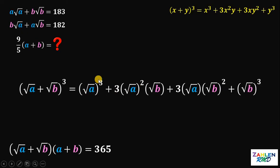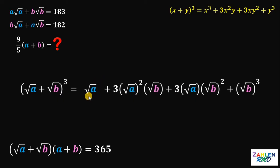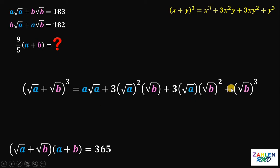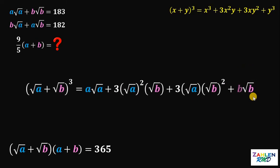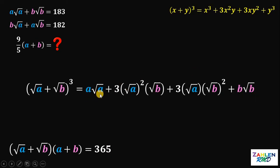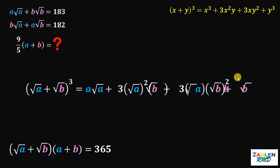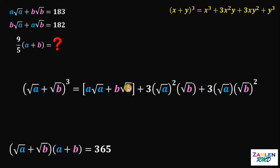Now, square root of A raised to the 3rd power is the same as square root of A multiplied 3 times, which equals A times square root of A. Similarly, square root of B raised to the 3rd is equivalent to B times square root of B. We group A times square root of A and B times square root of B together. Notice from our given equation that A times square root of A plus B times square root of B equals 183.